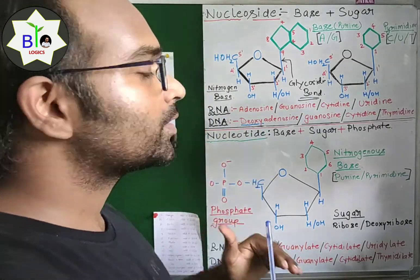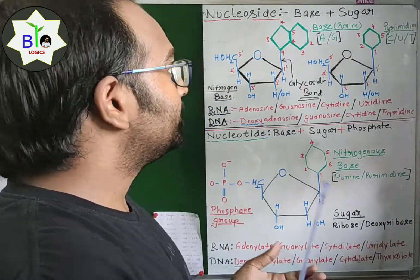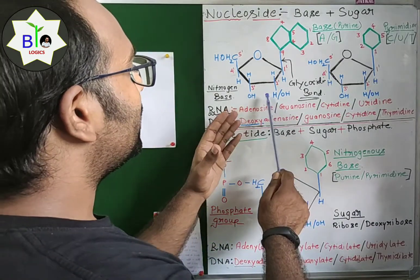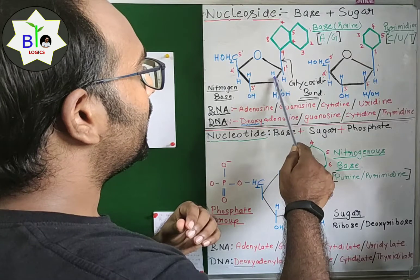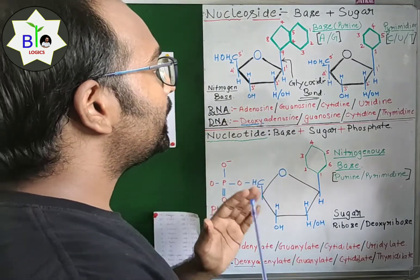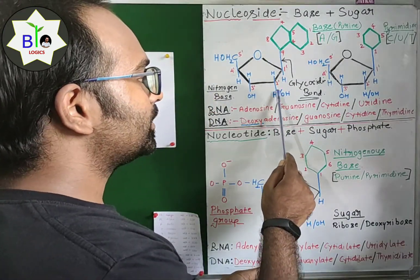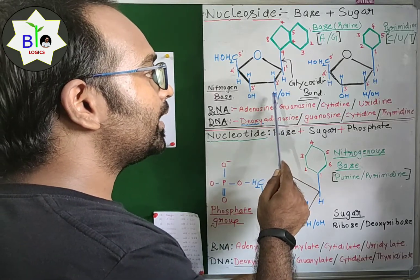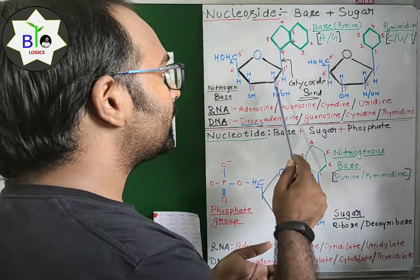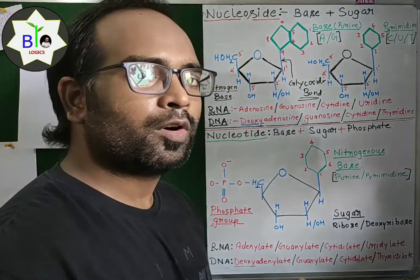Let's start with the nucleoside, and discuss the difference between nucleoside and nucleotide. A nucleoside is made up of two things: one is a base and the second is sugar. Here you can see the structure of sugar and the structure of a nitrogenous base. The sugar may be either deoxyribose or ribose. If there is an H present on carbon number two of the sugar, it will be deoxyribose because it lacks oxygen at carbon two. If an OH group is present at carbon two, it will be ribose sugar.